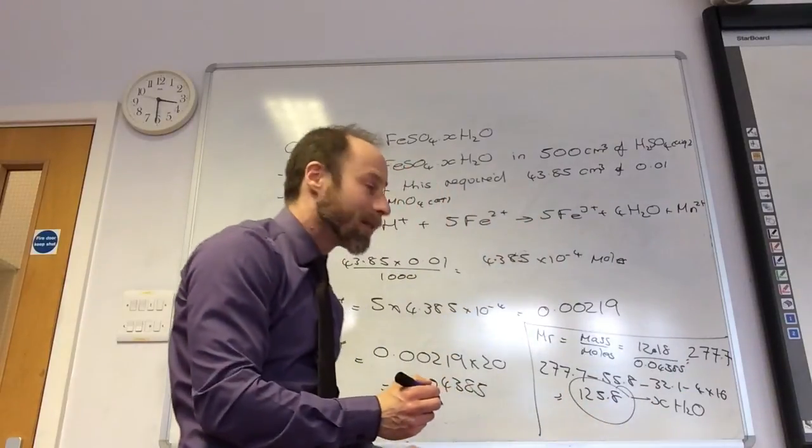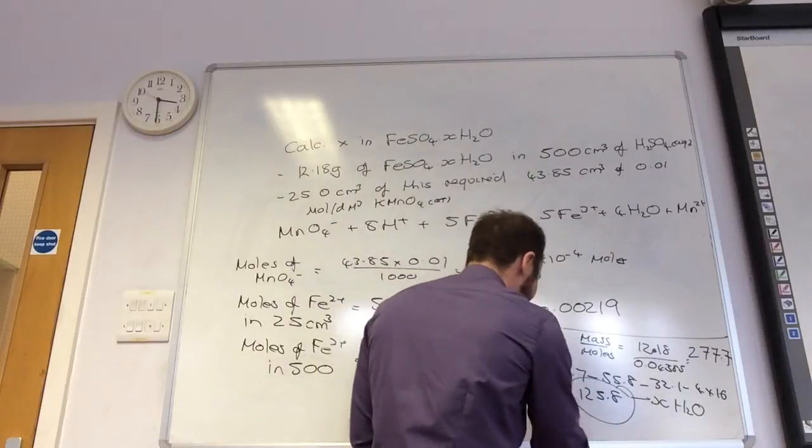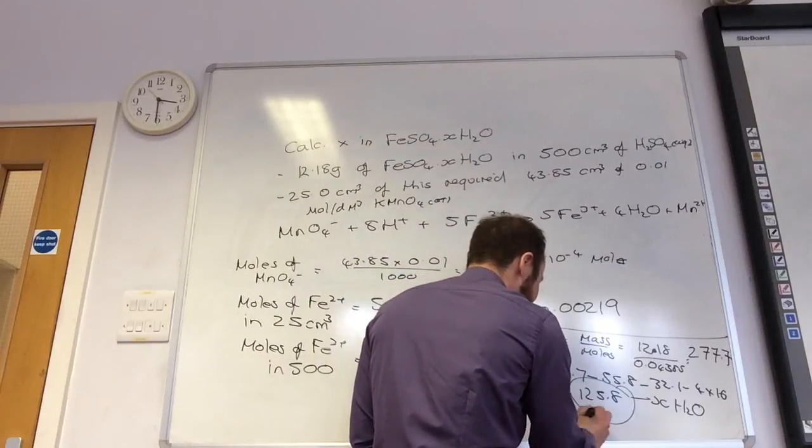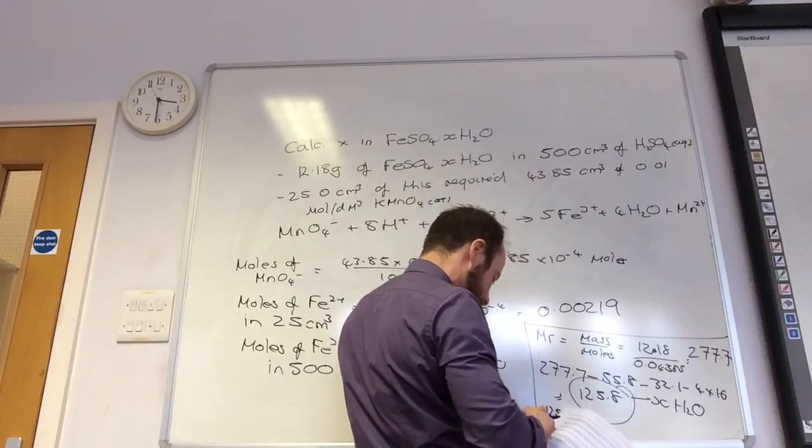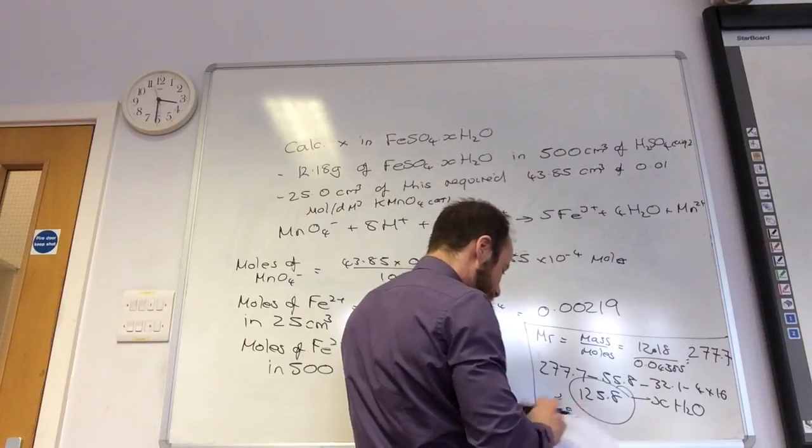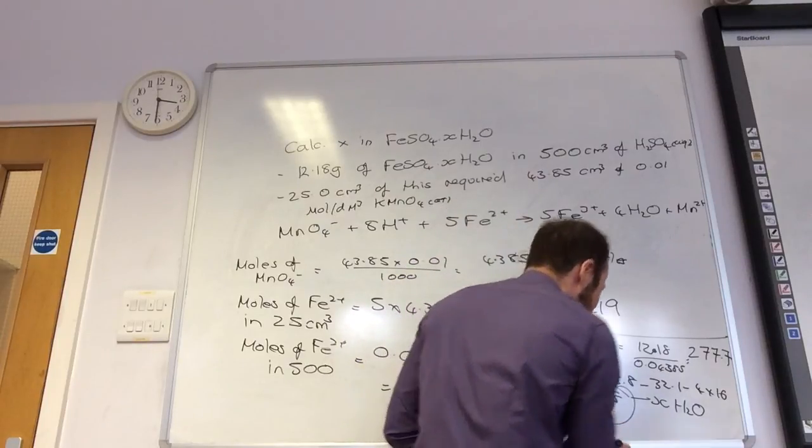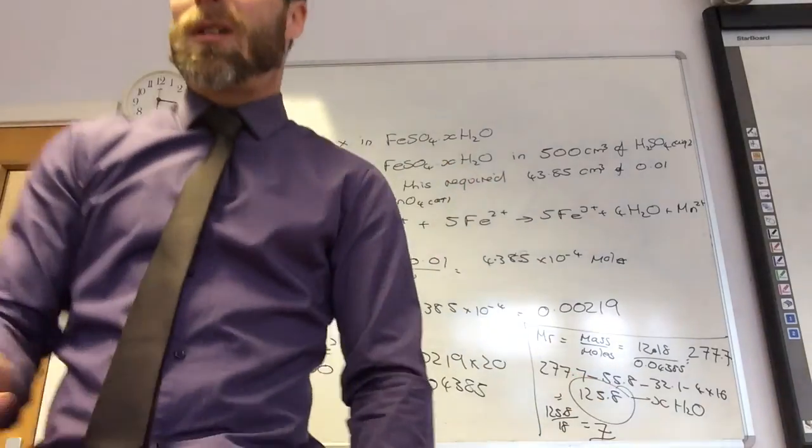So, that 125.8 is XH₂O. So, how can I find X? Divide by 18. Wow. So, 125.8 divided by 18 equals 7. Ta-da! Which I think is what we got last time.